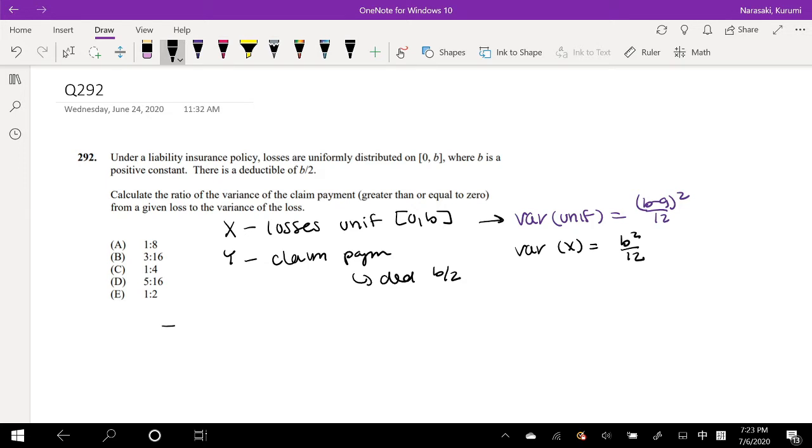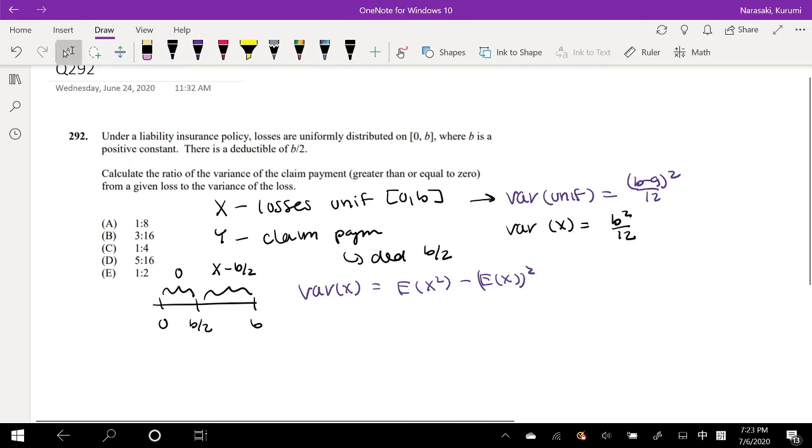Okay, well, we know that for Y, there is a deductible of b over 2. So, anything below b over 2 is 0, and anything over b over 2, the claim payment is going to be X minus b over 2. Okay, so then, again, the formula that we love so much, the variance of X is equal to expectation of X squared minus expectation of X, the whole thing squared. So, we need to find those two ingredients.